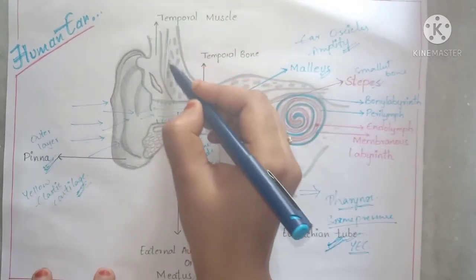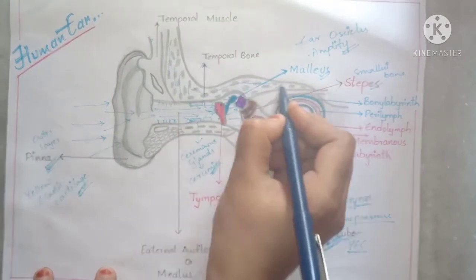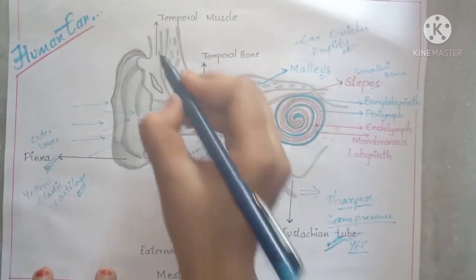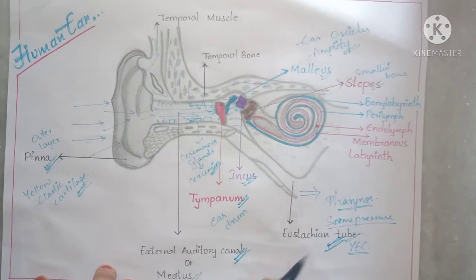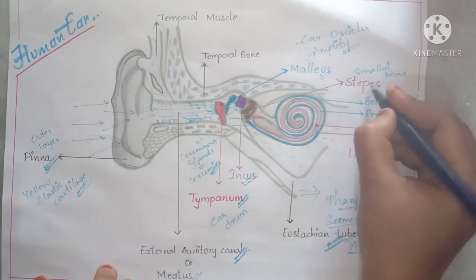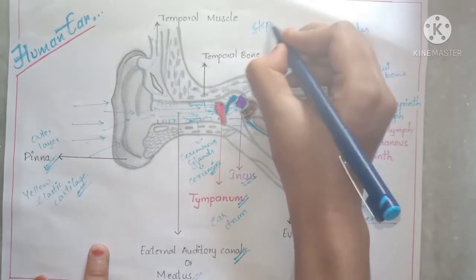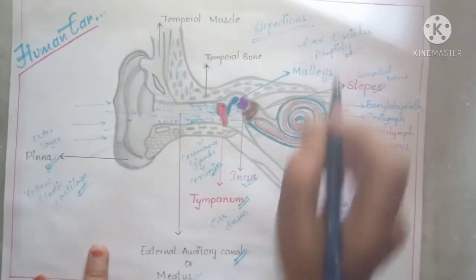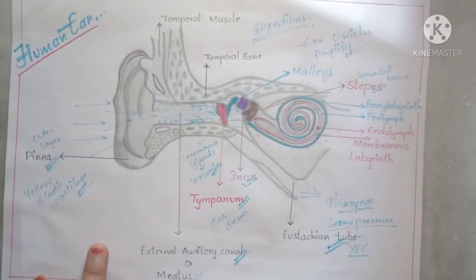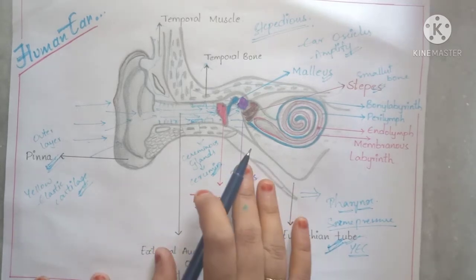Our ear is present inside the temporal bone, and the surrounding part is known as the temporal muscle. Just as the stapes is the smallest bone in our body, the smallest muscle in our body is also present in the ear, which is known as the stapedius muscle.